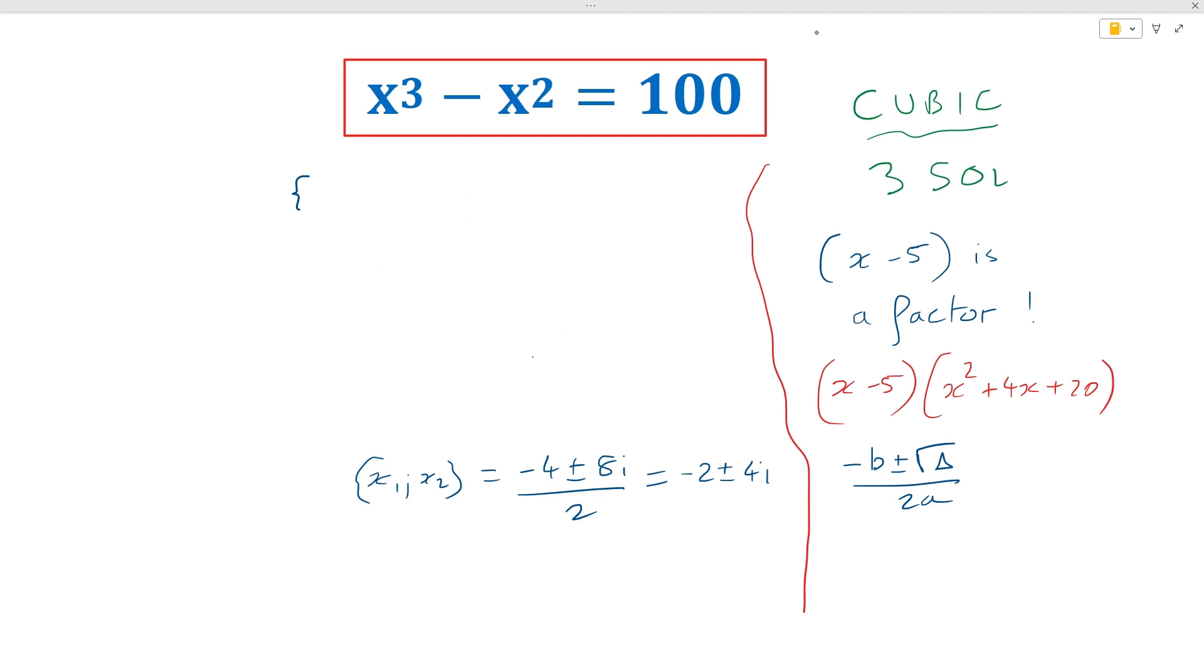So wrapping things up for this beautiful cubic equation, we have three solutions x1, x2, x3, out of which we have the first solution which is 5, and then two complex solutions. So the first one is negative 2 minus 4i, and the second complex solution is minus 2 plus 4i. And that's the end of our solution set. And so this is how you solve this equation. Three beautiful solutions.